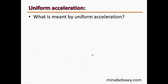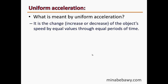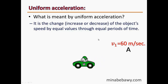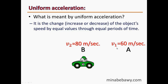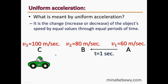What is meant by uniform acceleration? It is the change — whether increase or decrease — of the object's speed by equal values through equal periods of time. For example, a car moves from A to B with V1 equals 60 m/s, then its speed at B is V2 equals 80 m/s, covering the distance in one second. Then from B to C, its speed at C is V3 equals 100 m/s, also covering that distance in one second.